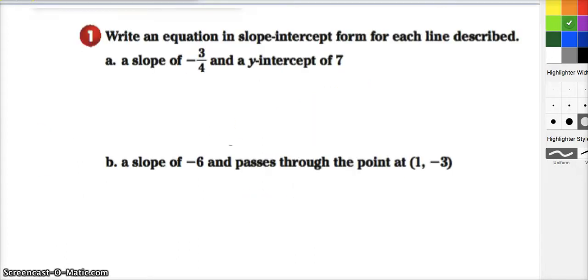Let's get started with some problems. In each of these problems, we are asked to write an equation in slope-intercept form for each line described. So slope-intercept form, we remember, is y equals mx plus b. And here, this is going to be pretty straightforward. A slope of this and a y-intercept of that seems like a bit of plugging and chugging to me. So I know that slope is going to be replacing the m and the y-intercept will be replacing the b. So my equation will be y is equal to negative 3 over 4x plus 7. Pretty simple.